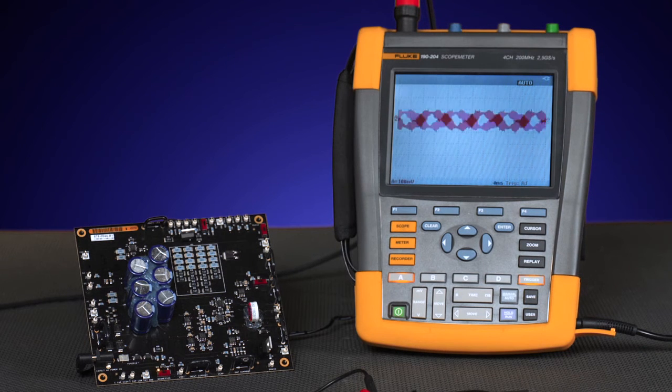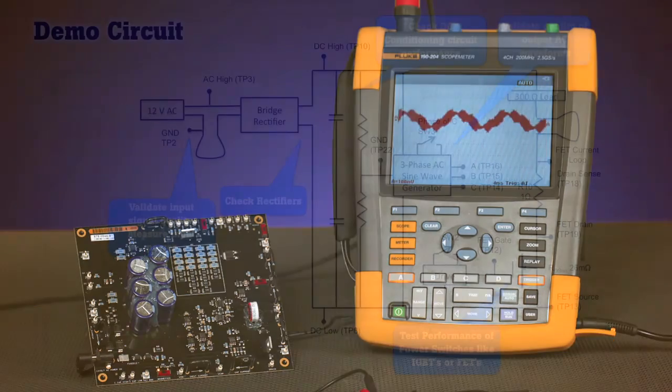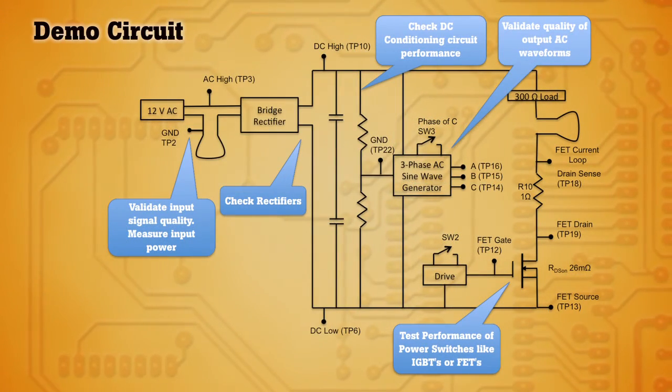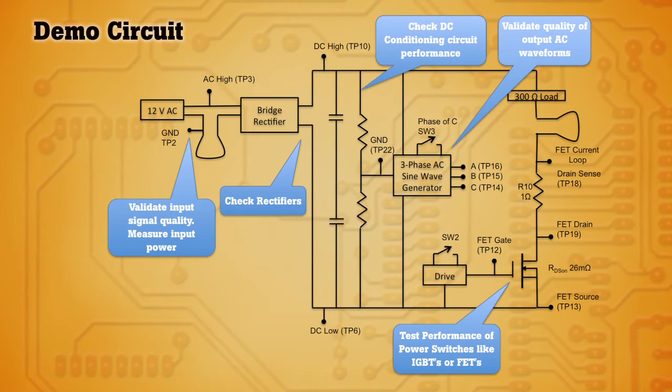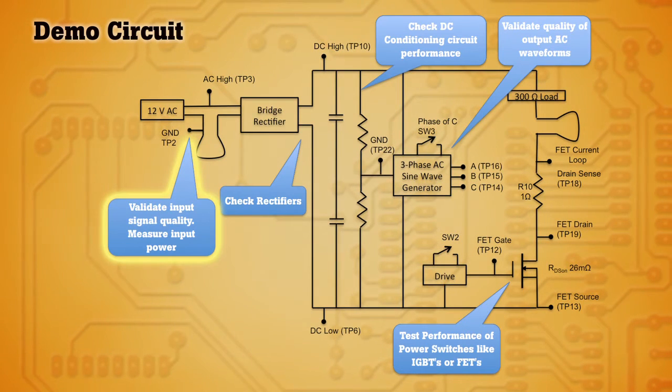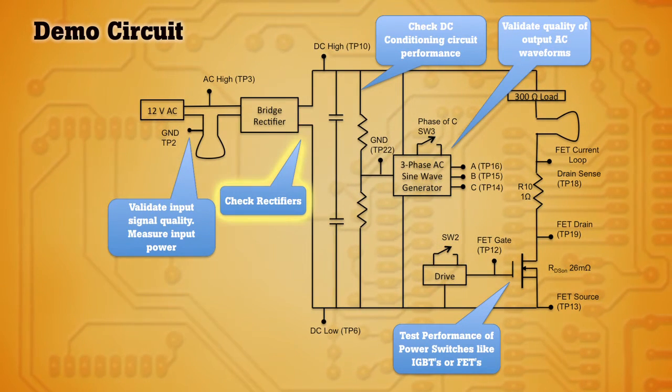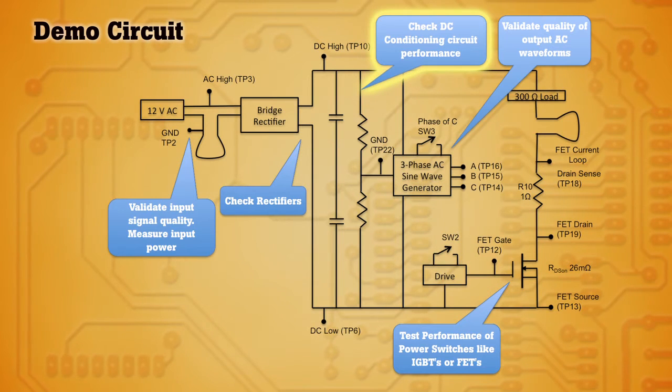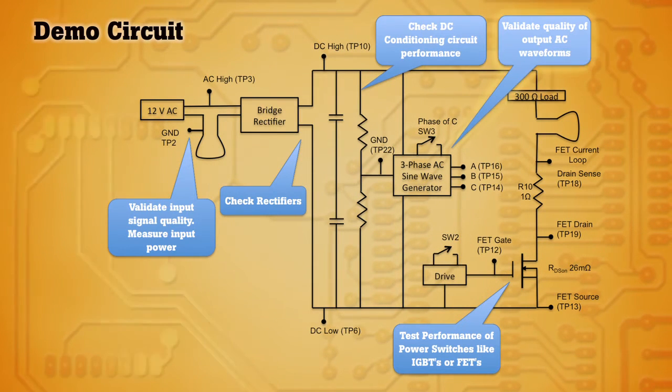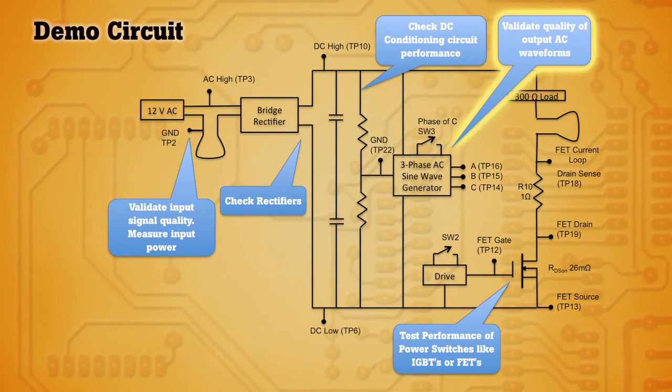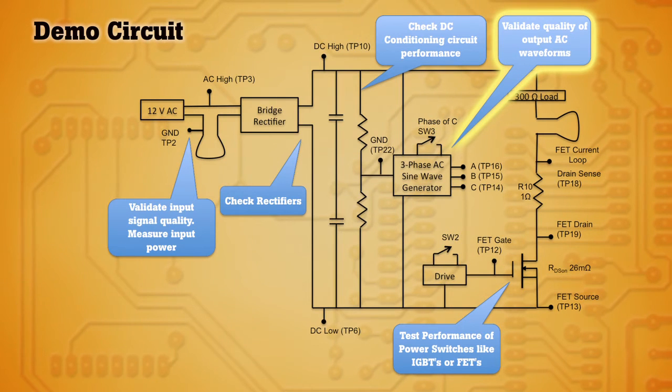The demo board we're using today is a basic inverter circuit that you might find in industrial power electronic systems. It starts with the input circuit. The AC goes through a bridge rectifier creating a DC bus that will then be used in the inverter circuit. Switches or high-powered switches modulate this DC bus to provide an AC waveform on the output of the board.